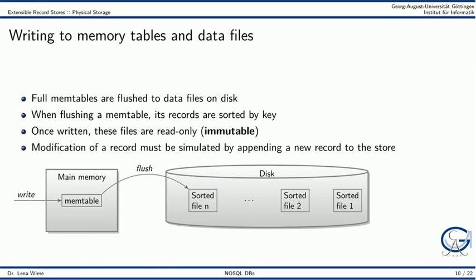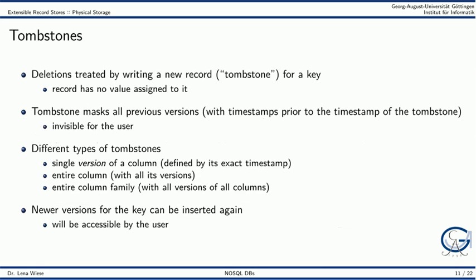This means that any modification of a record, like deletion or update, must also be simulated by appending a new record to the store. Deletions are treated by writing a record called tombstone for a key. This tombstone record has no value assigned to it. The tombstone marks all previous versions of the key, that is, those versions with a timestamp prior to the timestamp of the tombstone. And these older versions are hence invisible for the user.